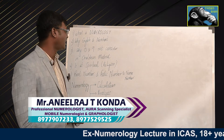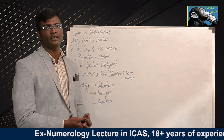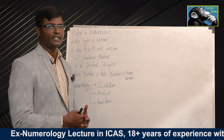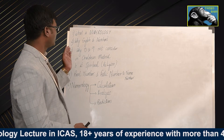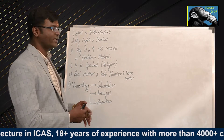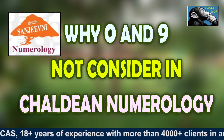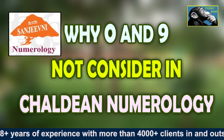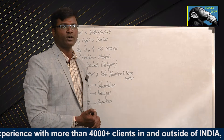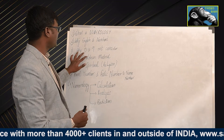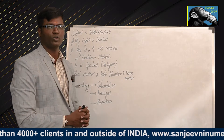The main topic of this episode is 0 and 9. It is my intention to consider and explain these numbers, and I am also going to answer questions and doubts in this episode. We will try to answer these questions using the Chaldean Method.